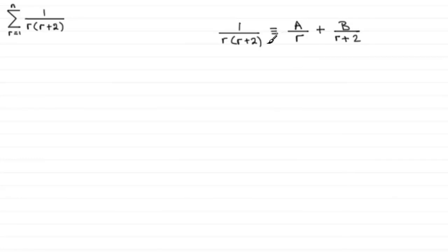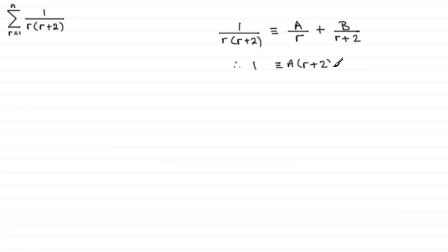In the usual way, we multiply both sides by r(r+2), and therefore we have 1 is identical to A multiplied by (r+2), plus B multiplied by r.